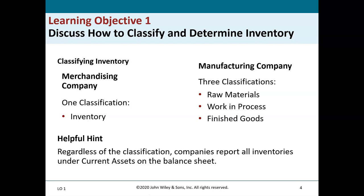We learned in chapter 5 that merchandising companies buy inventory and sell it to their customers — they have one classification simply called inventory. In a manufacturing company there are three classifications of inventory: raw materials, work in process, and finished goods. Raw materials are the materials they buy that they're going to use in the production process to build their finished goods.